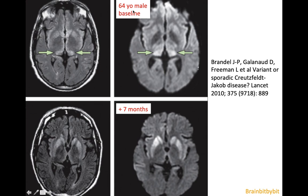This 64-year-old male presenting with rapidly progressive dementia was diagnosed with Creutzfeldt-Jakob disease. Because of the pulvinar involvement, they initially thought it was the bovine variant CJD. They performed additional examinations such as tonsillar biopsy, which were more in favor of sporadic CJD, and on follow-up MRI the pattern had changed a little more towards sporadic Creutzfeldt-Jakob disease.